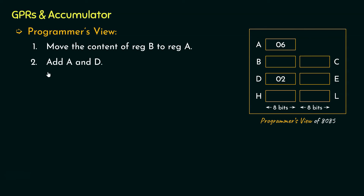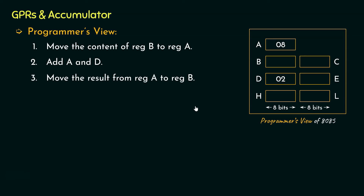During step two, we add A and D — the content of the accumulator (06) is added with the content of general purpose register D (02). Once this is done, the result 08 is stored inside the accumulator register. Now our intention was to get the result back in general purpose register B, so we perform step three: move the result from register A to register B. Finally, we have the result of the addition inside register B.